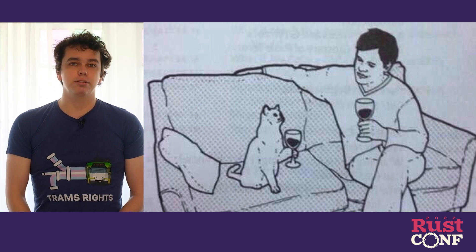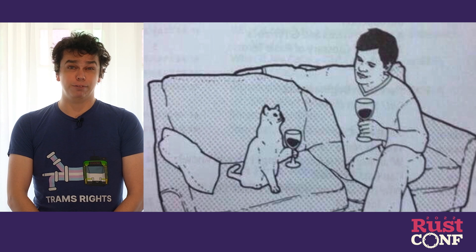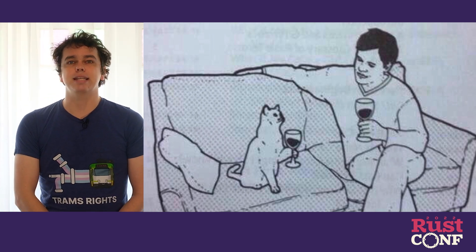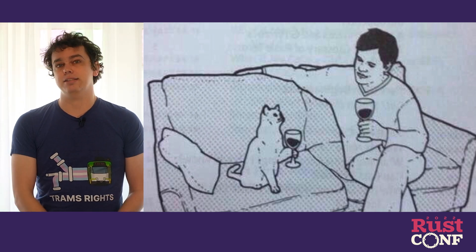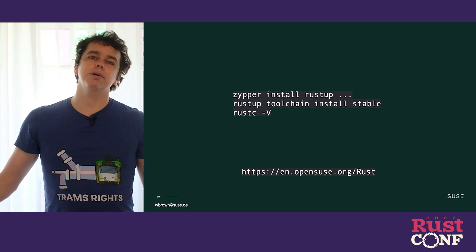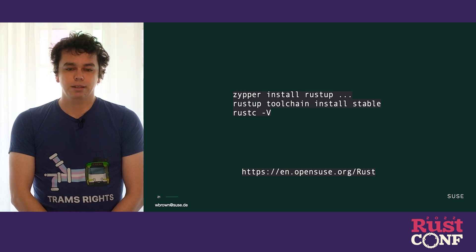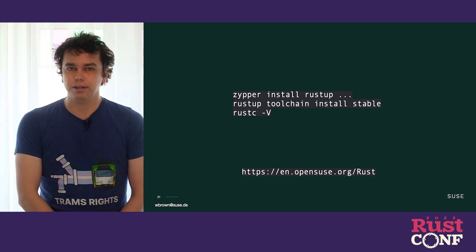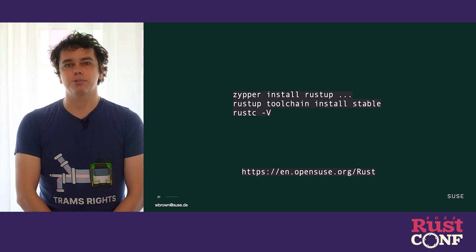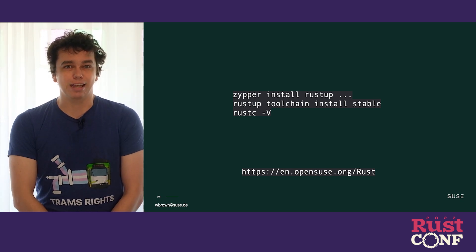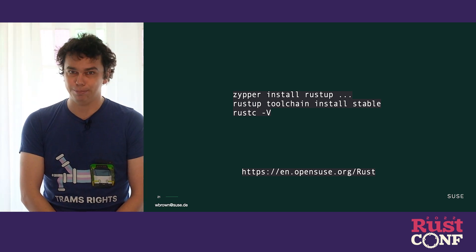If anyone at Mozilla who works on sccache is watching this talk, please get in contact with me — I have some patches that can improve performance by four times on large machines, and I've had some problems getting in touch on GitHub. I'd really love to talk with you about getting these contributed. So what does the process look like now if you're using OpenSUSE today as a developer? You can just use our package manager, Zypper, and install Rustup. That's it. You can use Rustup exactly the same way you would with curl-pipe, and we might even be one of the only distributions that actually encourages you to use Rustup rather than our own package toolchains.